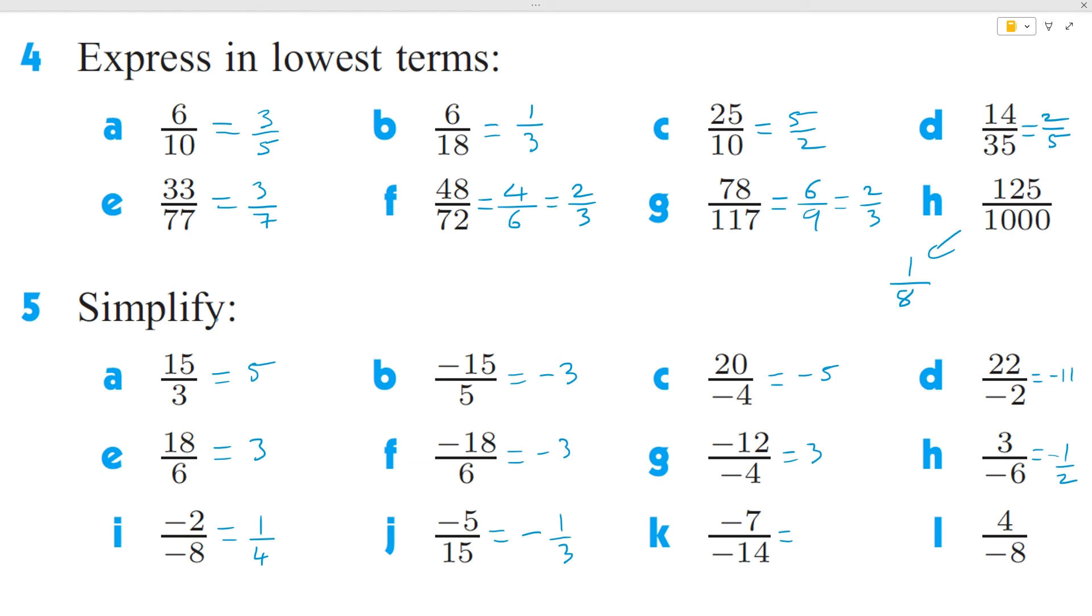Question k, negative over negative is positive, and 7 over 14 is a half. And then question l, we have one of each, so this number will be negative, and it's going to be 1 over 2 because you can divide the top and the bottom by 4. So negative one half here.